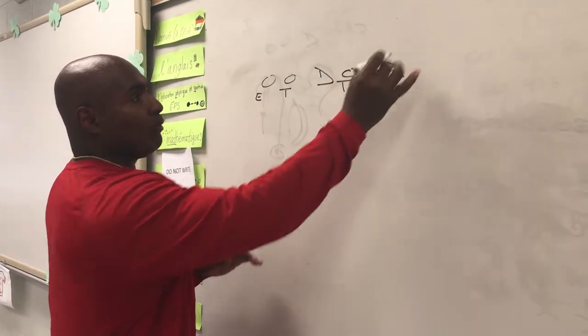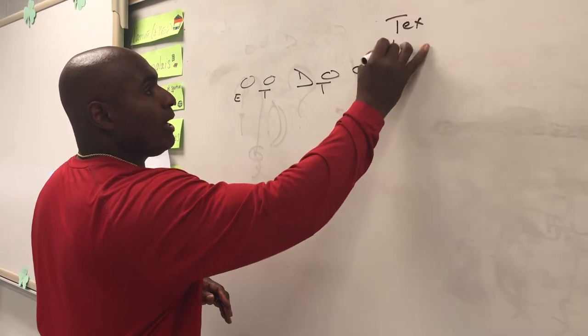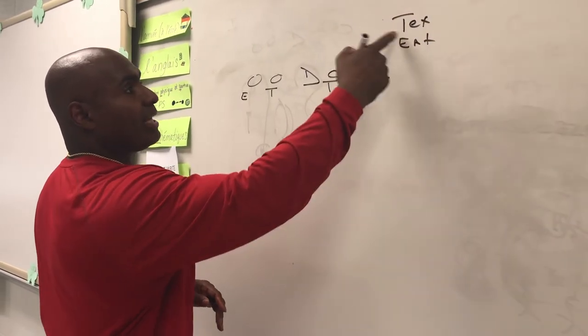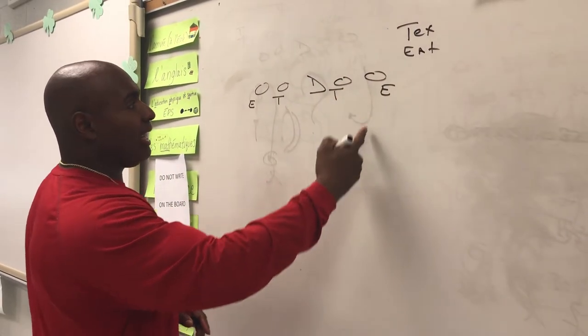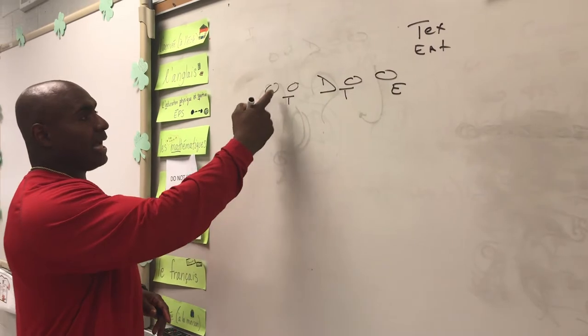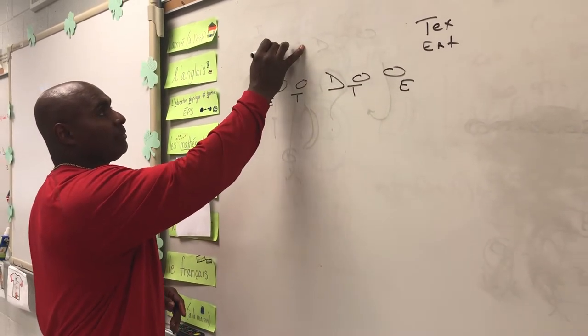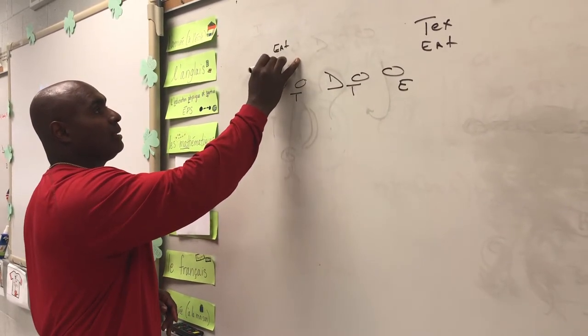We call this — we can go TEX, or we can go EAT. The first letter tells you who goes first, either tackle or end. The same thing on this side here — an EAT or a TEX.